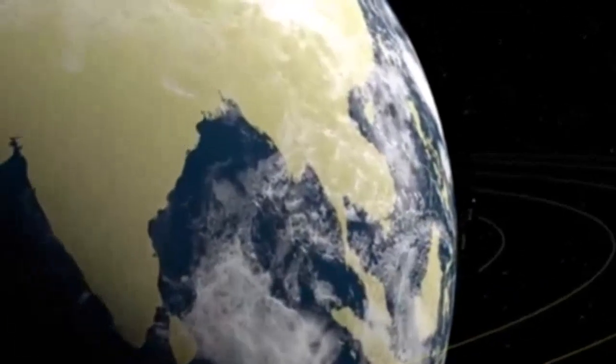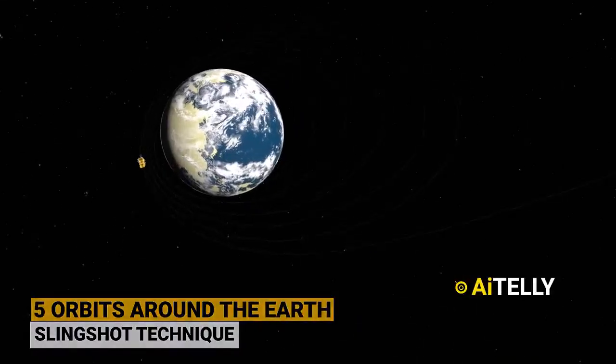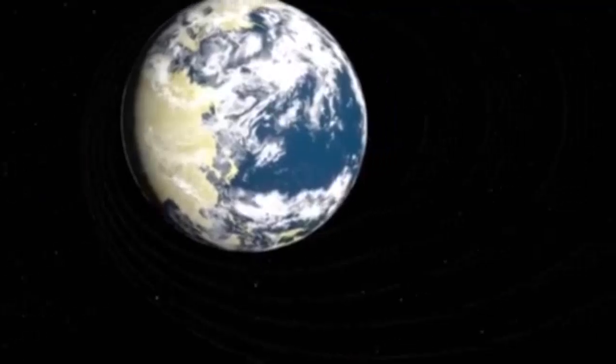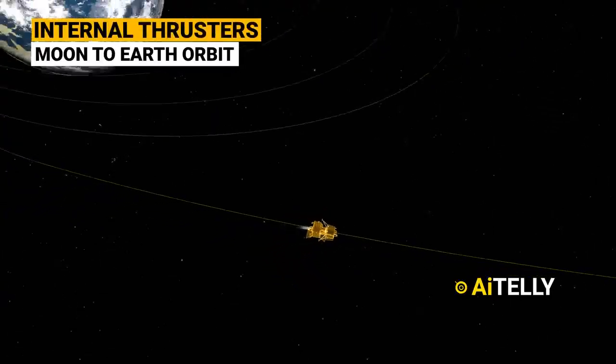In layman's terms, they call this a slingshot technique, using the gravitational pull of the Earth and the internal thrusters to achieve the Moon-to-Earth orbit path.